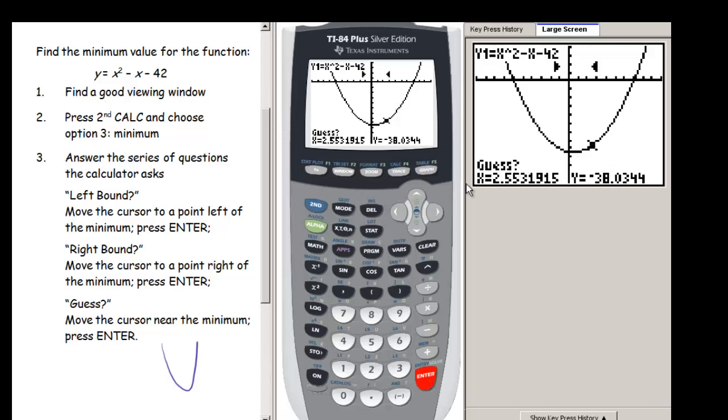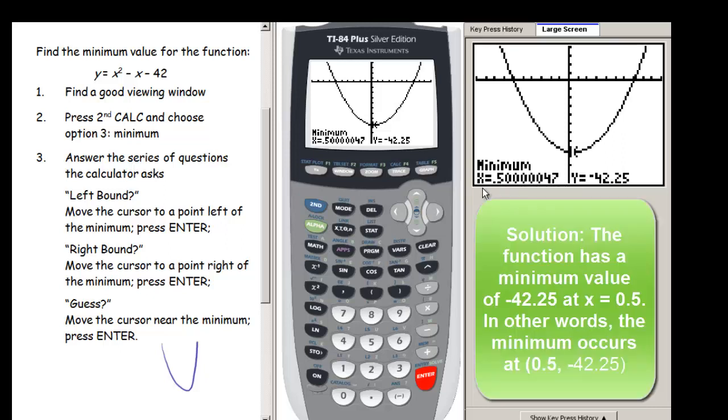And then it asks me for a guess. So I could move to where the guess is, where I think a good guess is, or I could just press enter. So press enter. And I'm done now. It tells me that my minimum is at x equals .500. So your number may come up as something slightly different than this. We're going to round this to .5. So this little 47 way out here is just the calculator's rounding error.